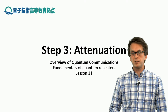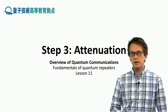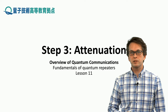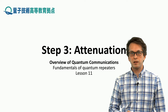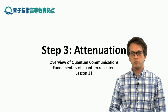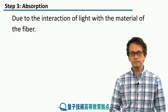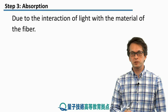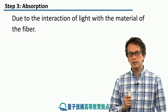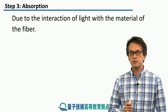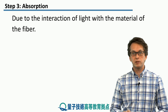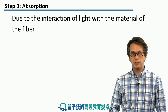Step three: attenuation. In this step we will consider the rest of the sources of losses that we mentioned in step one. So let's look at absorption. Absorption happens due to interaction of light with the material of the fiber.